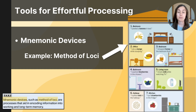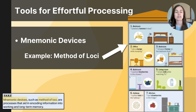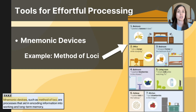Let's talk about different tools for effortful processing. There are so many things you need to remember — schoolwork, addresses, to-do lists, passwords, shopping lists. We often use intentional tools to help us remember when we have a big batch of information, drawing on those tools to remind us of what we need. You've probably used a tool called a mnemonic device to help you remember a batch of information.